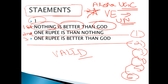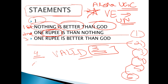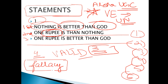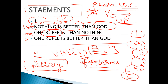A syllogism should have three terms. So guys, this is what we call a fallacy. I will also cover different fallacies. Right now under this, let's look at the fallacy of four terms — when four terms appear but in reality only three terms should be there.